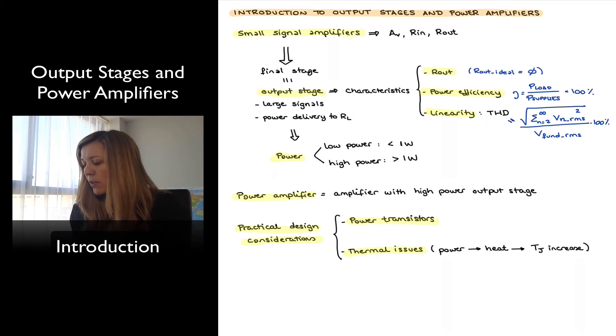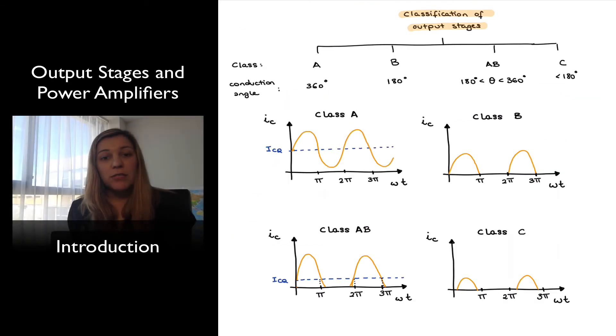And so we're going to see specific design methodologies that are used in order to control these thermal issues in order to provide better thermal stability for our circuits. Output stages and power amplifiers are typically classified based on the percent of time that the output transistors are turned on or are conducting and as we shall see that is very much linked to the power efficiency of the output stage.